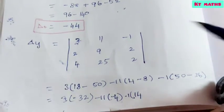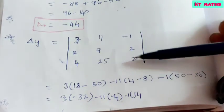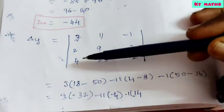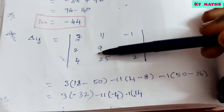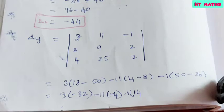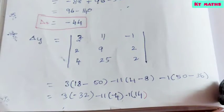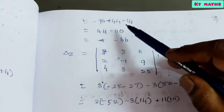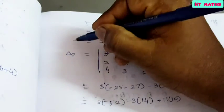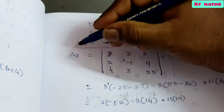Expanding Δy: 3 into (18 − 50) = 3 into −32 = −96, minus 11 into (4 − 8) = minus 11 into −4 = plus 44, minus 1 into (50 − 36) = minus 1 into 14 = −14. So −96 + 44 − 14 = answer −66. Therefore Δy = −66.